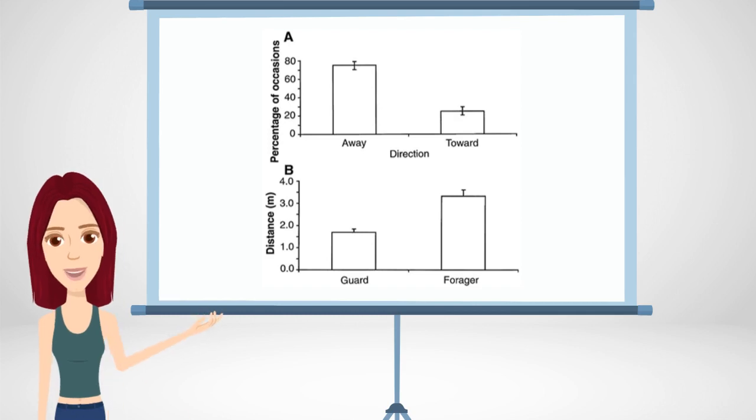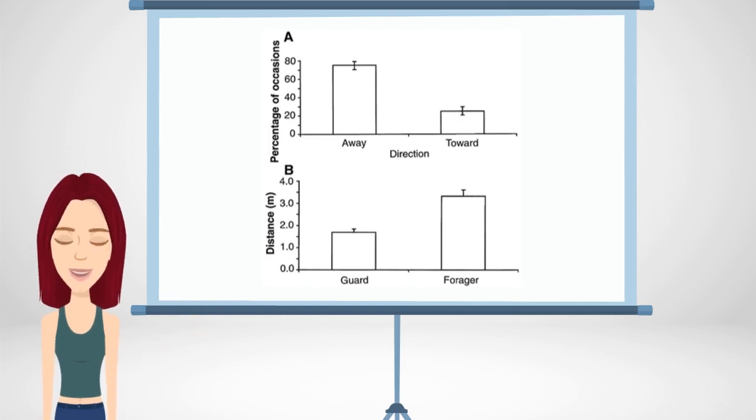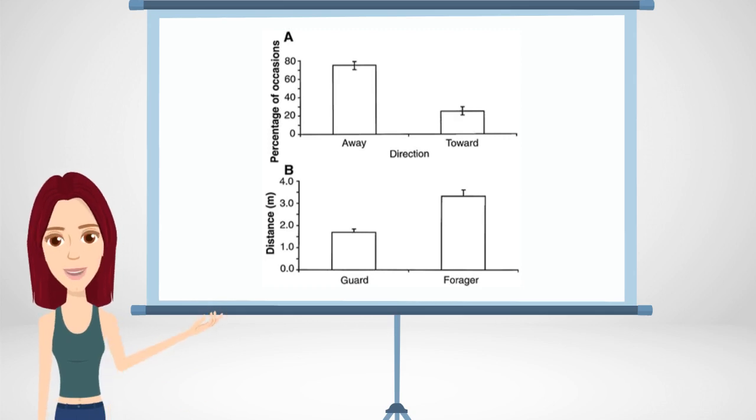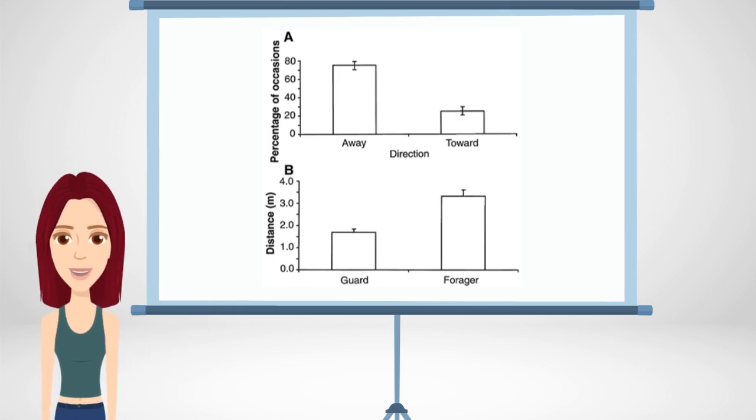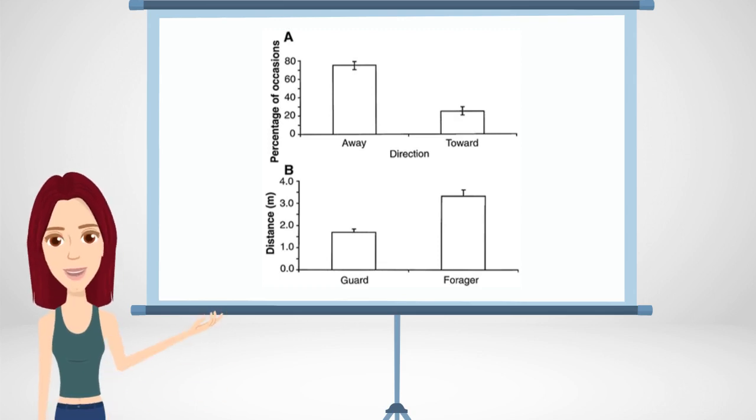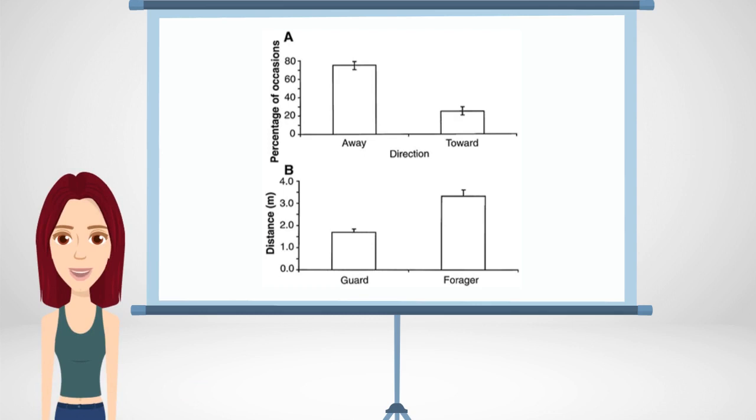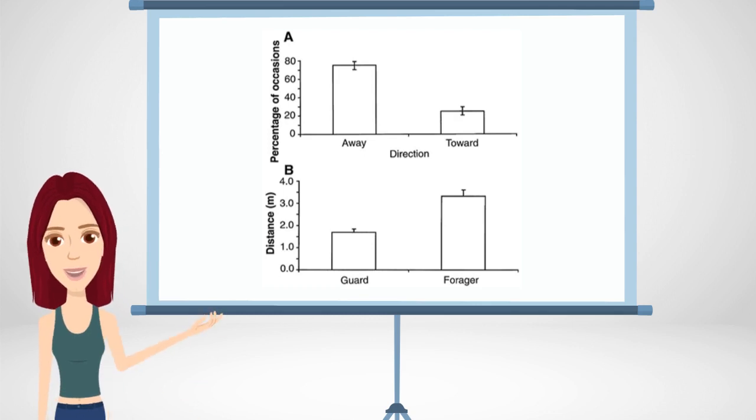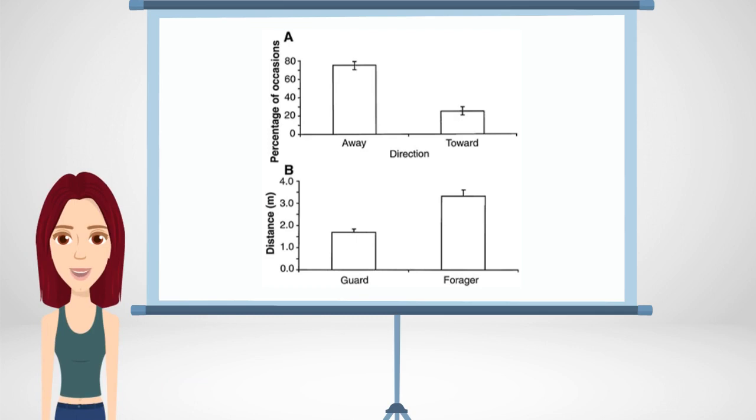As previously mentioned, those who perform the sentinel role can be considered selfishly motivated. It has been found that the sentinel has a lower predation risk than the foragers, therefore providing themselves with a direct benefit. The graph further justifies this by highlighting that foragers are double the distance away from the hole compared to the sentinel, so if danger strikes, they can dart to safety quicker. Graph A shows the time sentinels spent looking at the group and away. You can see more time spent looking away rather than concerning themselves with the danger in the direction of the foragers. Graph B shows the average distance from the burrowing home.